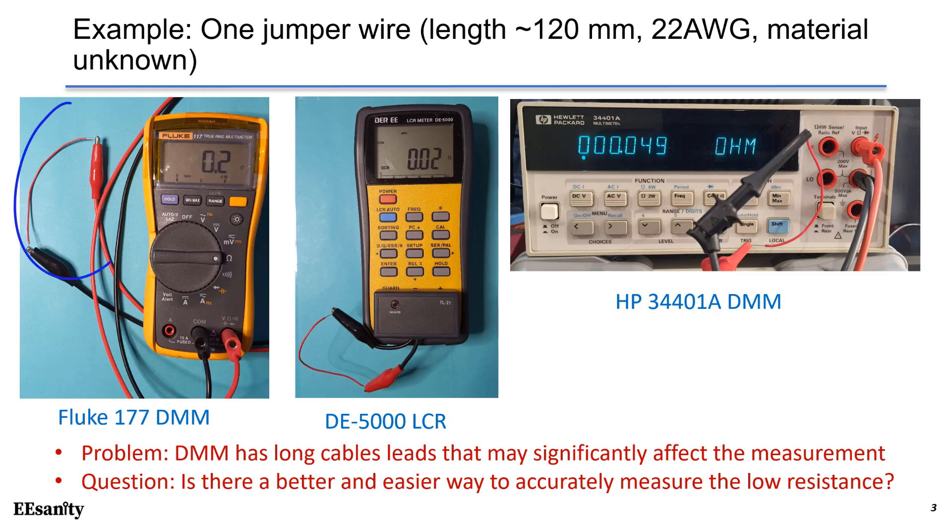In this example, we have a piece of jumper wire about 120 mm long, 22 AWG. How can we measure the resistance? As shown in the picture, we can use digital multimeter or LCR meter.